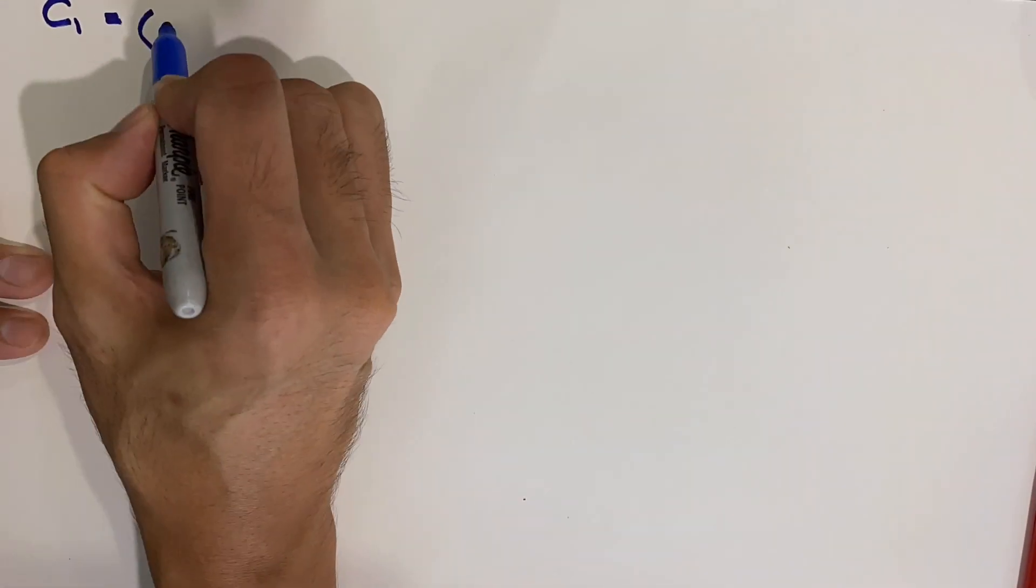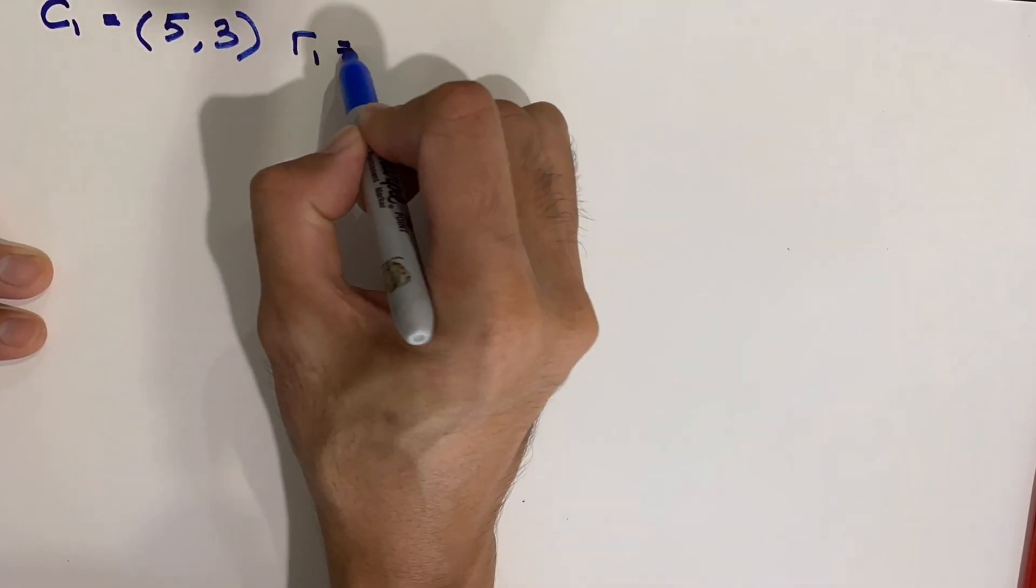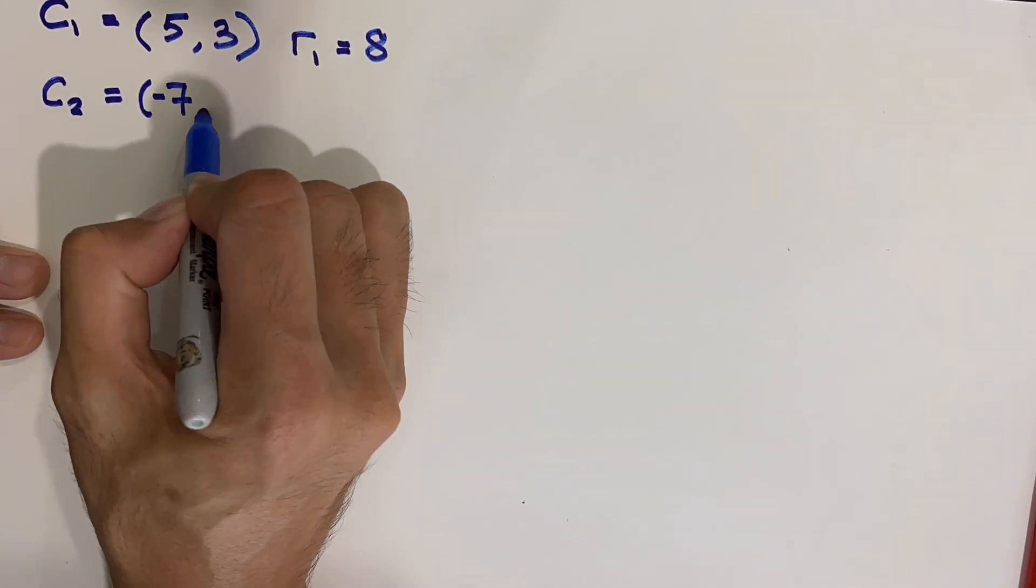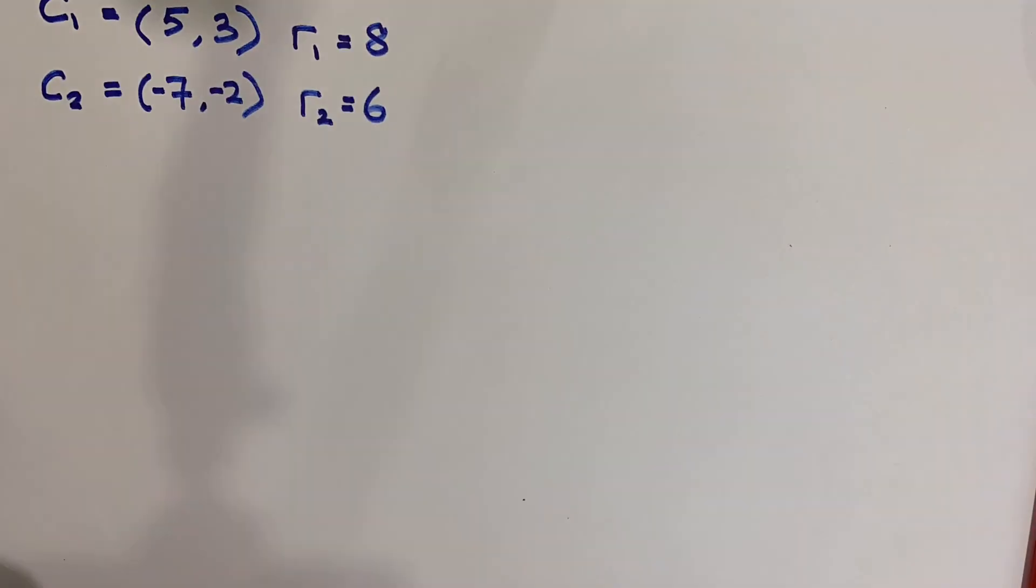In this question, two centers of circles are given to be C₁ at (5, 3) with radius 8, and C₂ at (-7, -2) with radius 6.